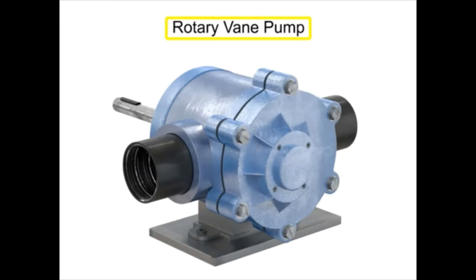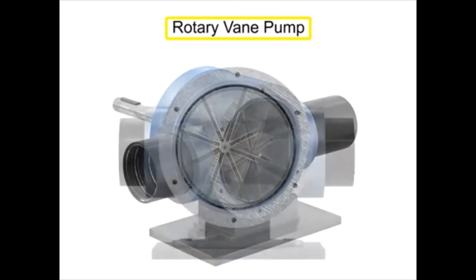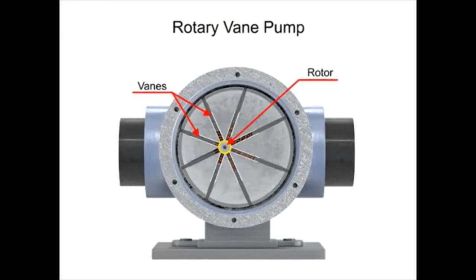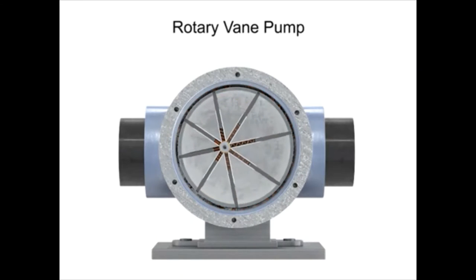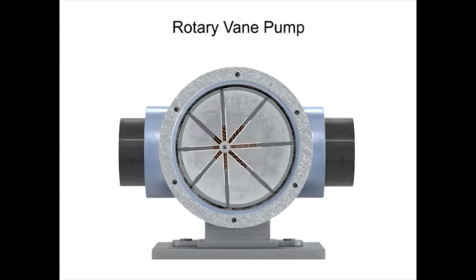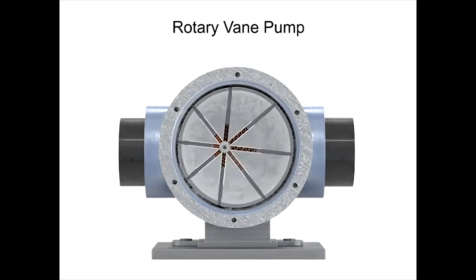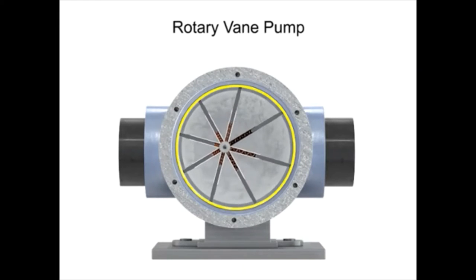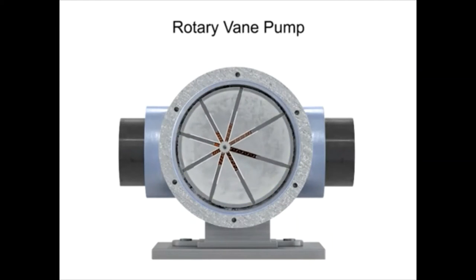A rotary vane pump is a positive displacement pump that consists of vanes mounted to a rotor. The vanes are on an off-center drive shaft. As the shaft rotates, the variable length vanes slide in and out to maintain contact with the pump housing. The tension in the vanes is maintained by either springs or hydraulic pressure.